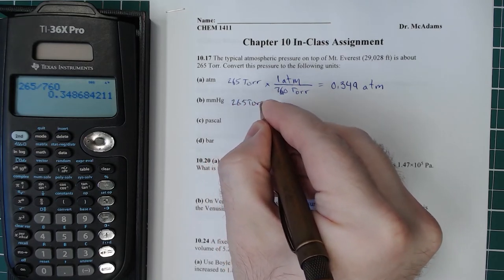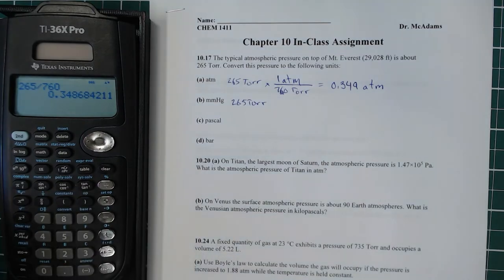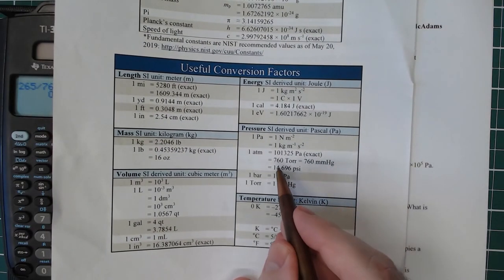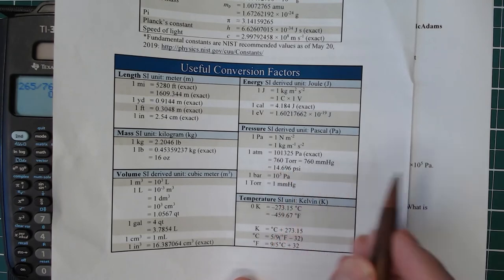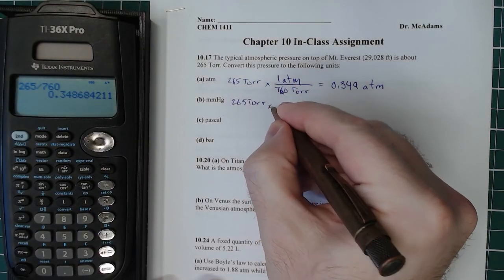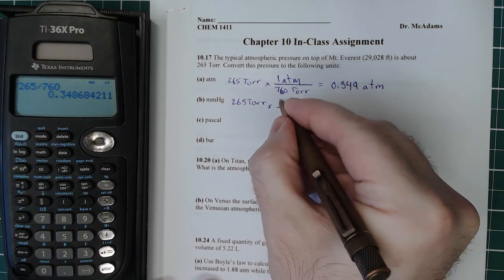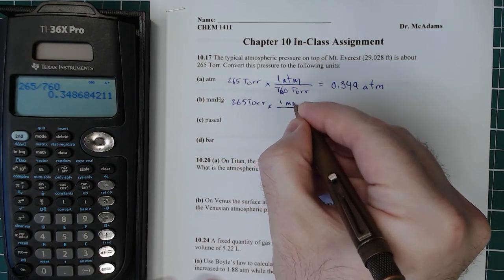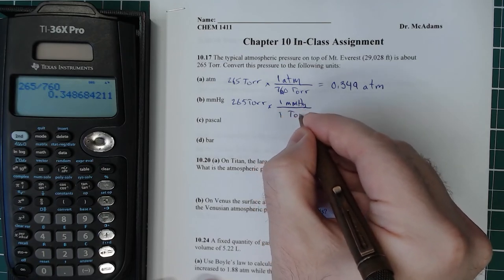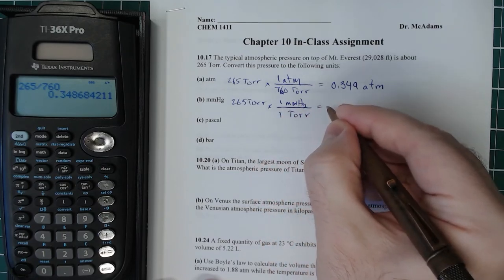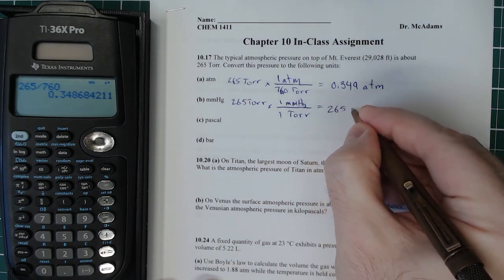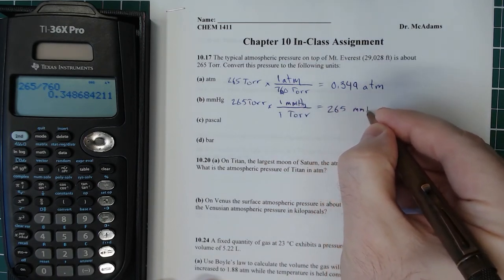So, all right, enough about that. 265 Torr. We want to convert this into millimeters of mercury. This is hardly even a conversion. 760 Torr is 760 millimeters of mercury. That means one Torr is equal to one millimeter of mercury. We don't even need a calculator here, but I'm going to write it out. One millimeter of mercury is one Torr. And of course, Torr cancel out. And there we go. 265 millimeters of mercury.